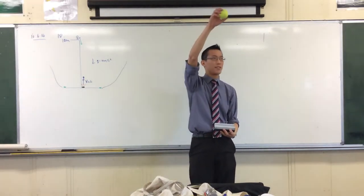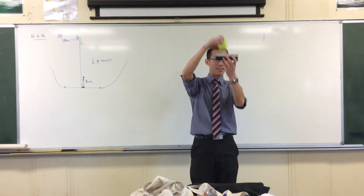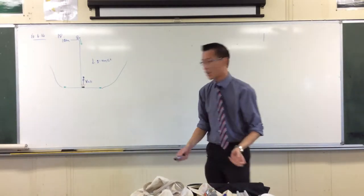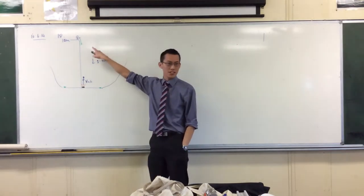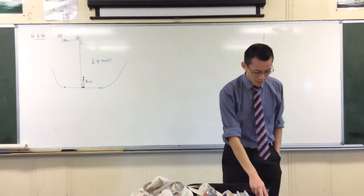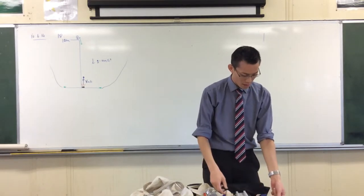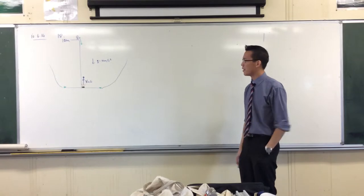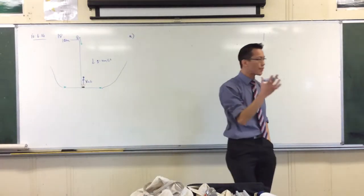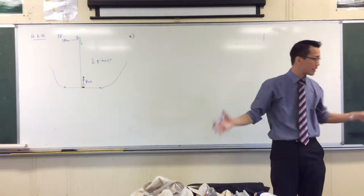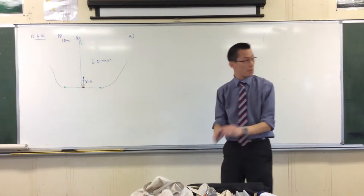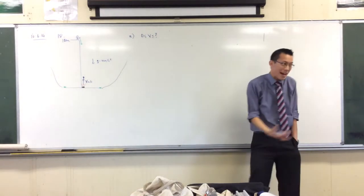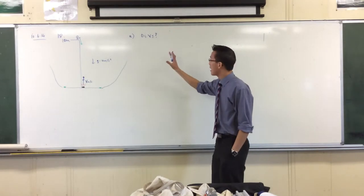If you fire it fast enough, they'll actually hit before the ball comes back down to the ground — somewhere in the middle. So for what values of V will a collision occur? We're working out the lowest V that allows them to collide. It's an inequality we're after, not a single value — some kind of range.